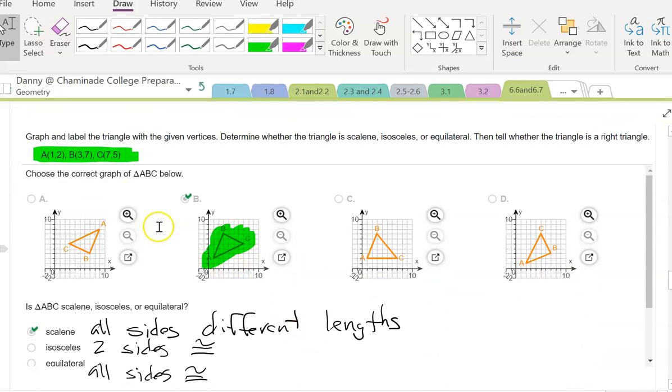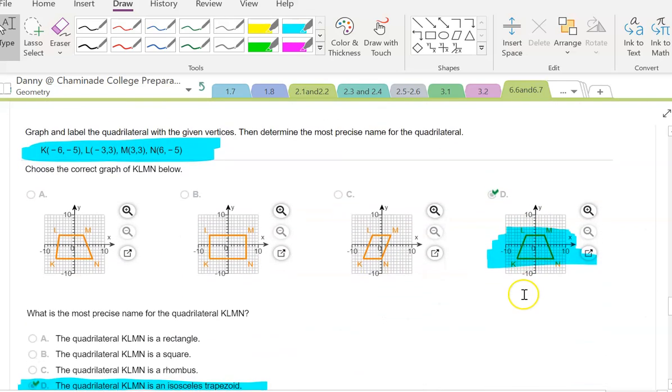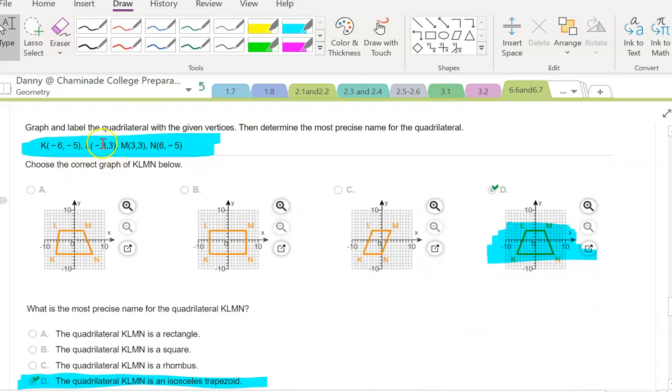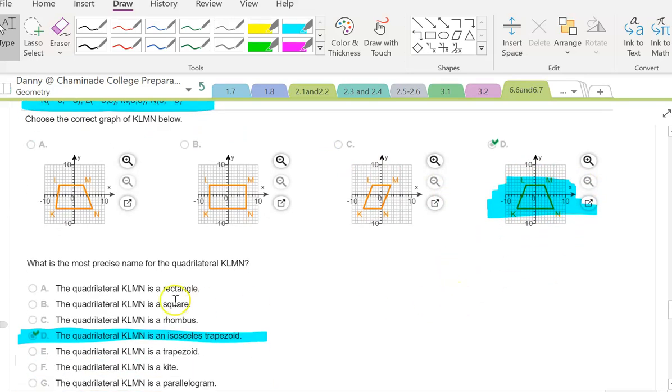And this one, we're just simply graphing them. So just find the graph that has A at 1, 2, as you can see here, and then so on and so forth. We see it, and then we have to see if it fits the definitions of scalene, where all sides have different lengths, isosceles where two sides are congruent, and equilateral where all sides are congruent. And then in our last one, same thing here, we're just graphing this, and we see we have an isosceles trapezoid. And then we just make sure we pick that.